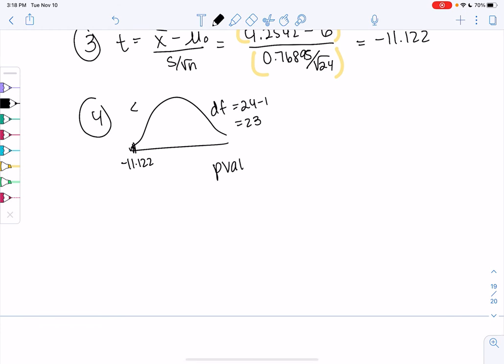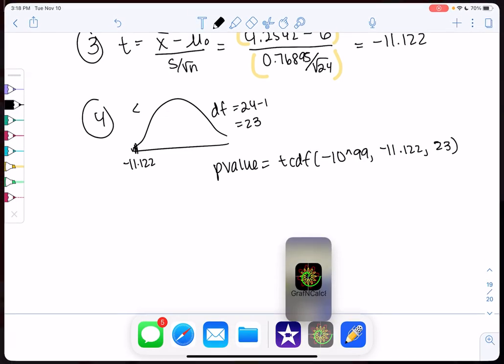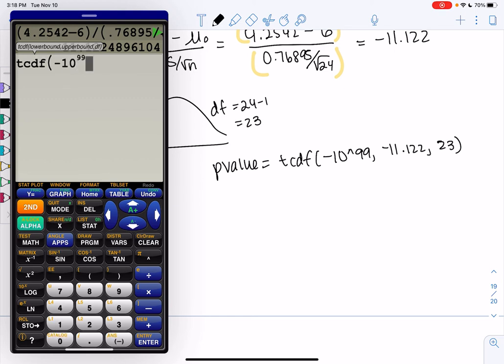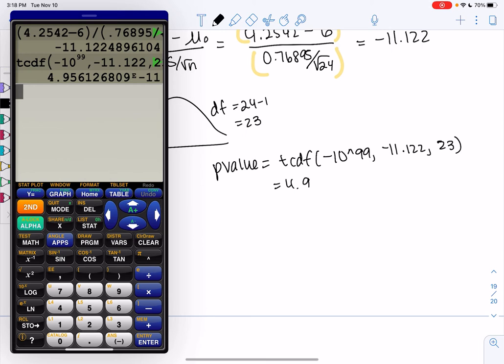So my p value will be tcdf, because we're using t scores. Lower is negative infinity. Upper is negative 11.122. And degrees of freedom is 23. Go ahead and type that. You get a funny looking number. 4.956, it doesn't matter, e to the negative 11. So this is like 11 decimal places. So to four decimal places, it's 0.0000. Very, very, very little risk.